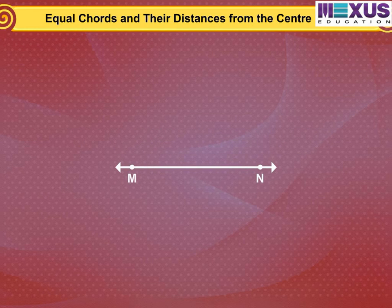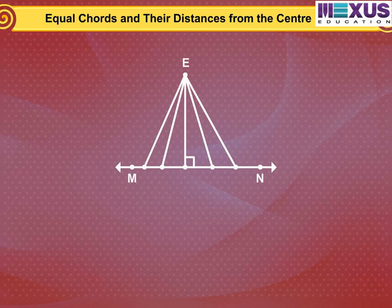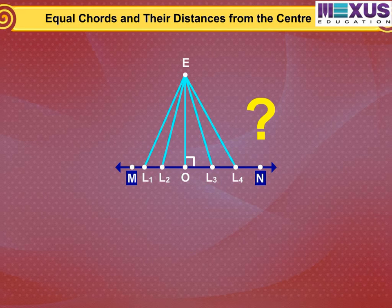Let MN be a line and E be a point. Since there are infinite numbers of points on a line, if you join these points to E you will get infinitely many line segments — EL1, EL2, EOB, EL3, EL4, and so on. Now, which of these is the distance of MN from E?